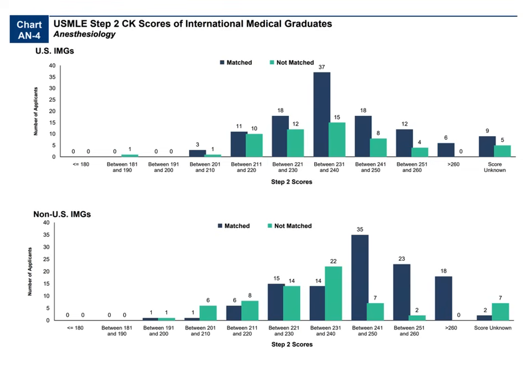The probability of matching by Step 1 score shows US IMGs can approach over 90% chance by scoring around 246. Non-US IMGs need closer to 255 for a 90% chance, and neither curve ever hits 100%. For Step 2: the most success for US IMGs came between 231 and 240, and for non-US IMGs between 241 and 250 — consistent with the Step 1 curve. The takeaway is that if you're an IMG, you absolutely need to set your sights on a high score. Nothing is guaranteed, so do as best you can on both USMLE Step 1 and Step 2.